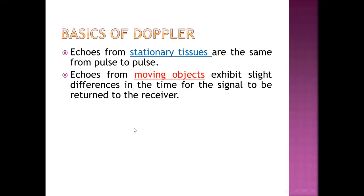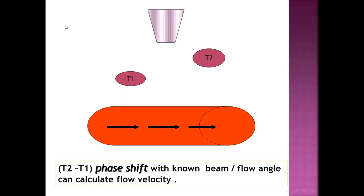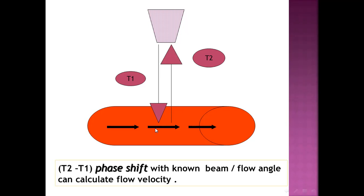To understand this, this figure will illustrate the idea. The impulse travels from the transducer to the moving object at time T1, and then the moving object changes position. So the returning signal at T2 has changed position relative to the transducer, unlike a stationary object.